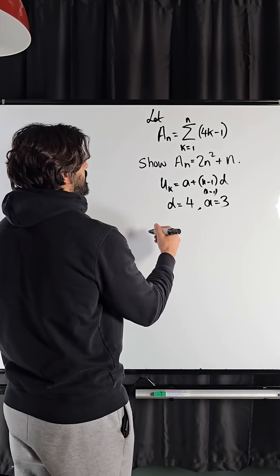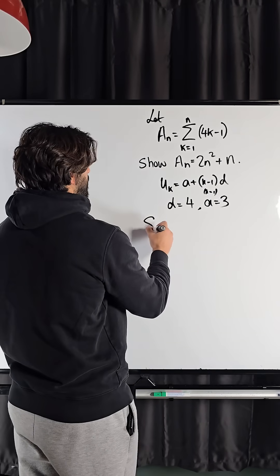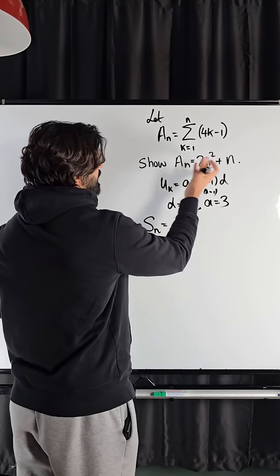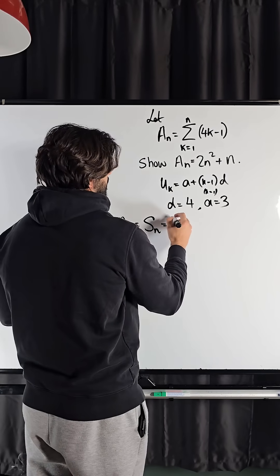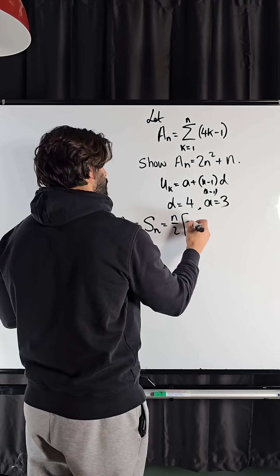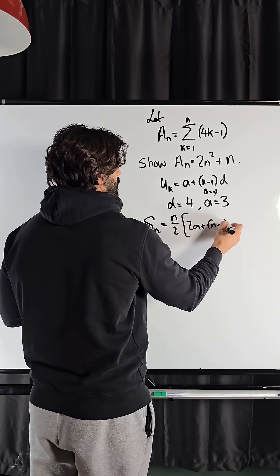So we can now find the general term of the sequence by doing S_n or A_n, doesn't really matter. So A_n is S_n in our notation, is n over 2, 2a plus n minus 1 times d.